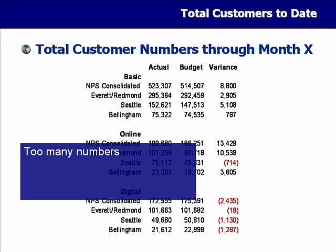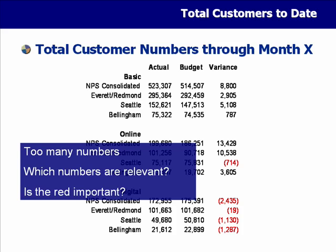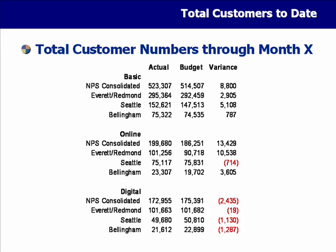There are way too many numbers here. There's no way that as an audience member I can figure out what you're really trying to say, and I don't know which numbers are relevant. The red numbers come from a default in Excel — if it's a negative number it puts it in red and in brackets because that's an accounting standard, but we're talking about customer numbers here, not dollars and cents.